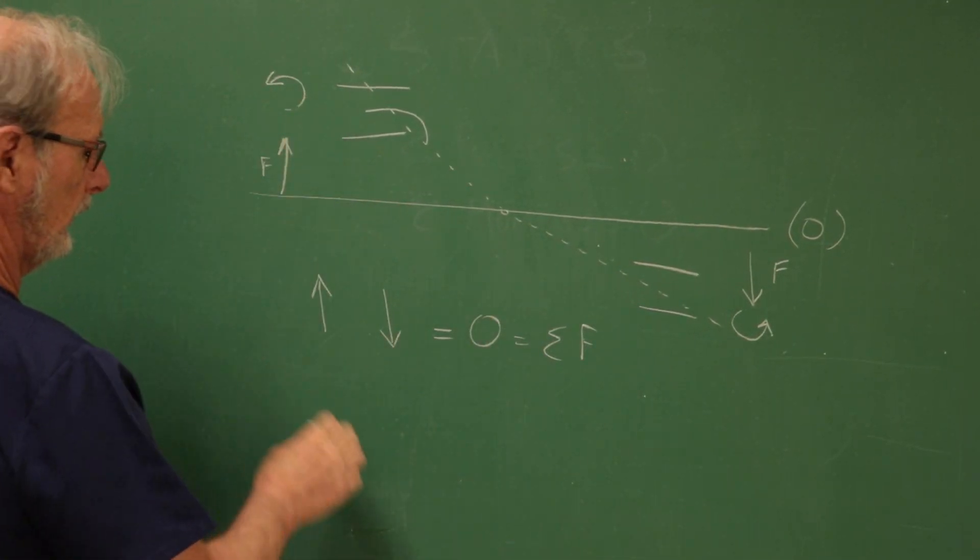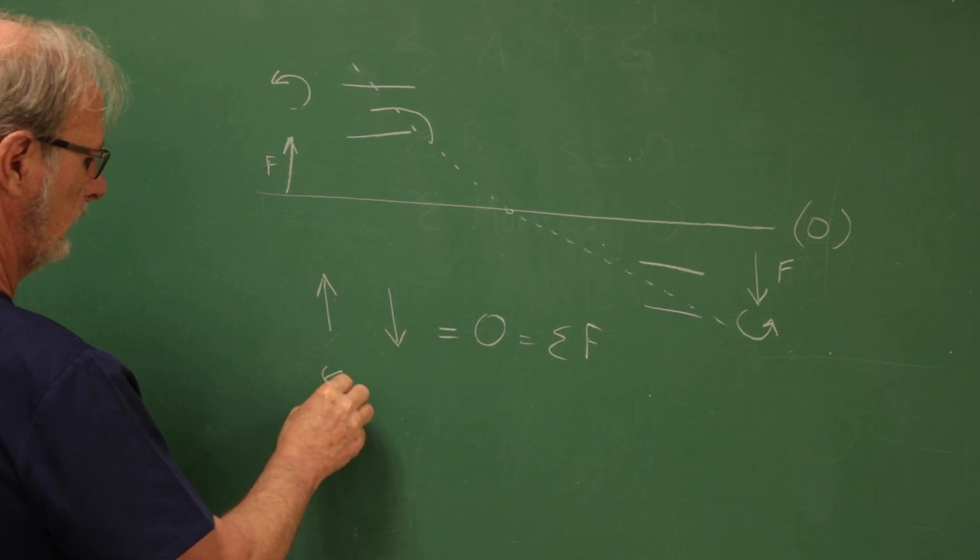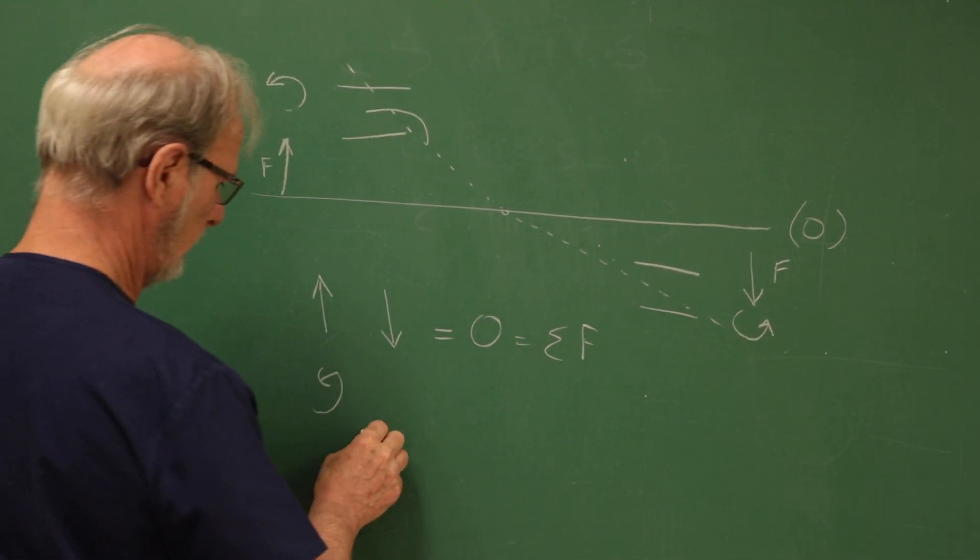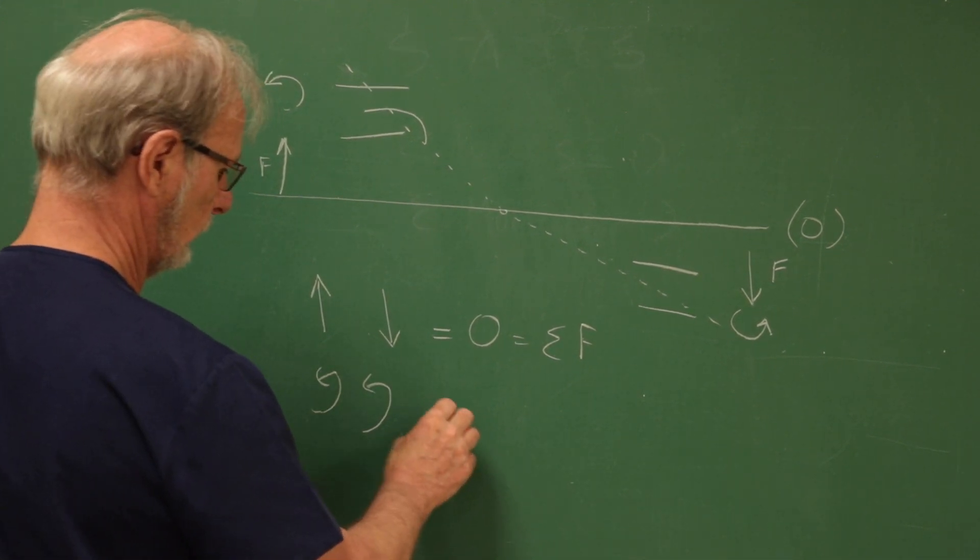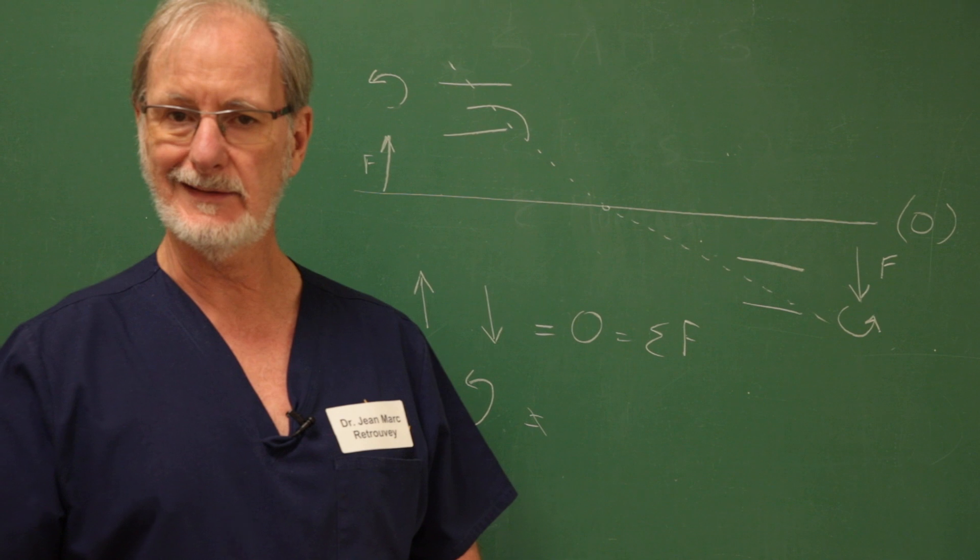But then you say, oh wait a minute, I got a moment this way here and I add this moment here, and they actually add each other. So this is not zero. How come it's not working?